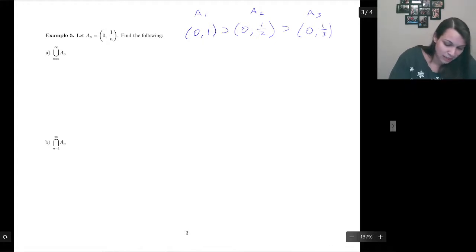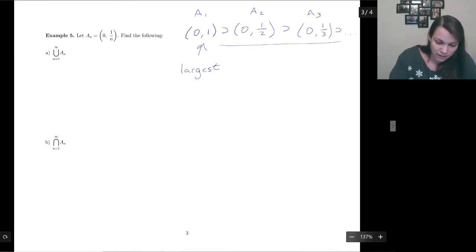Now we have set containment going the other way. Now this one is the largest. And he's going to contain all of these guys. So when we look at the infinite union, we're going to say, okay, this one contains all of these ones. And so our union is going to be everything between everybody, which is just going to be the biggest one.